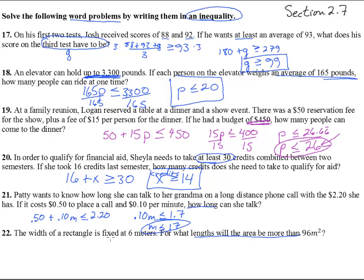Number 22, the width of a rectangle is fixed at 6 meters. So w equals 6. It can't move at all. However, as you change the length, the area can change. So it says for what length - I'm going to put L as my variable - will the area be more than 96? Now remember, area is length times width. So if we take length times 6, that has to be more than 96. We can just divide by 6, divide by 6, and we get that the length has to be bigger than 16, and we're in meters.